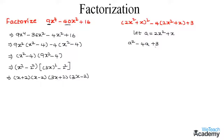Now let us factorize this expression. We have to find the factors of the constant term 3. We have 1 into 3, and here minus 1 minus 3 would be minus 4, which is the coefficient of the middle term. So we can write this expression as a square minus a minus 3a plus 3.